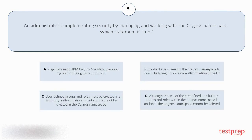Your options are: A. To gain access to IBM Cognos Analytics, users can log on to the Cognos namespace. B. Create domain users in the Cognos namespace to avoid cluttering the existing authentication provider. C. User-defined groups and roles must be created in a third-party authentication provider, and cannot be created in the Cognos namespace. D. Although the use of the predefined and built-in groups and roles within the Cognos namespace is optional, the Cognos namespace cannot be deleted.